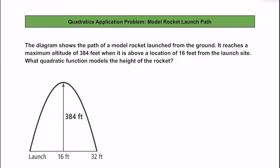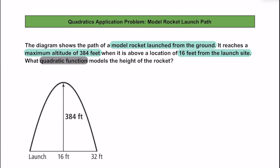We can see below that we have a diagram showing the path of a model rocket that is going to be launched from the ground. We know that this rocket is going to reach a maximum altitude or height of 384 feet, and this maximum height of 384 is going to happen 16 feet away from the initial launch site. Because we have this parabolic path of this rocket where it is moving up and then moving down, we are going to write a quadratic function that will represent the path of this rocket.